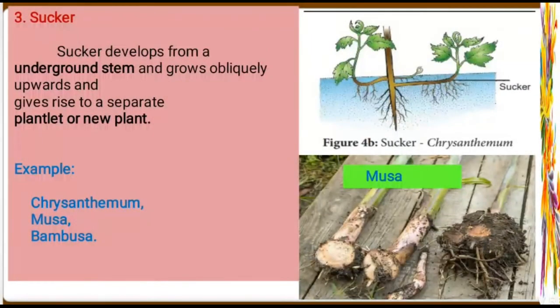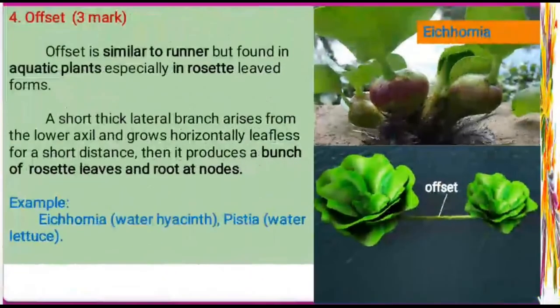The third sub-aerial stem modification is sucker. Sucker develops from an underground stem and grows upwards quickly, giving rise to a separate new plantlet. Good examples are Chrysanthemum and Musa (banana). In banana, new plants arise from the underground portion as suckers, which can be separated to form new plants.